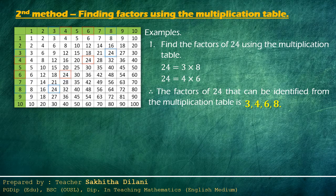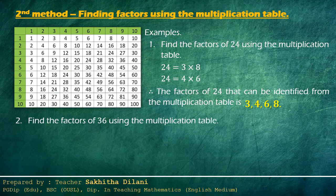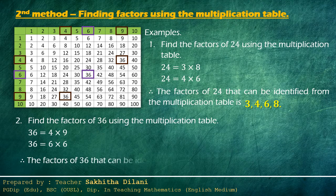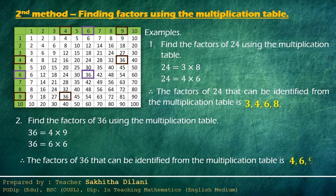Now let's see another example: find the factors of thirty-six using the multiplication table. Thirty-six is given by the product of four and nine, and also by the product of six and six. So thirty-six can be written as four times nine and six times six. Hence, the factors of thirty-six that can be identified from the multiplication table are four, six, and nine.